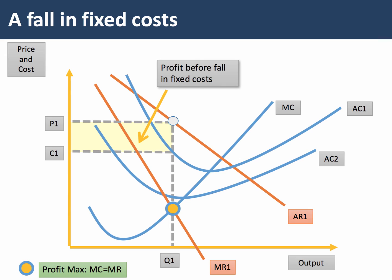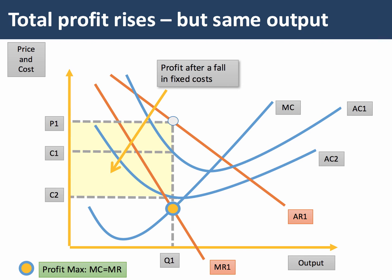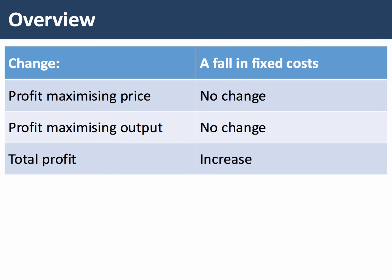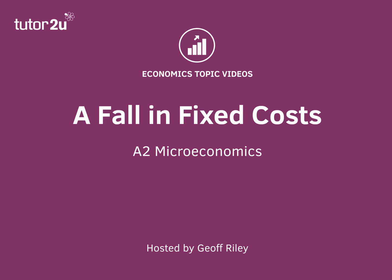That means the profit-maximizing output remains exactly the same, as does the price. At output Q1, the unit cost is now C2, and as a result profit after the fall in fixed costs increases to the new shaded area — the difference between price and cost. So if there's a fall in fixed costs, there's no change in the profit-maximizing price or output, but total profits do increase. This was a diagram short on a fall in fixed costs.